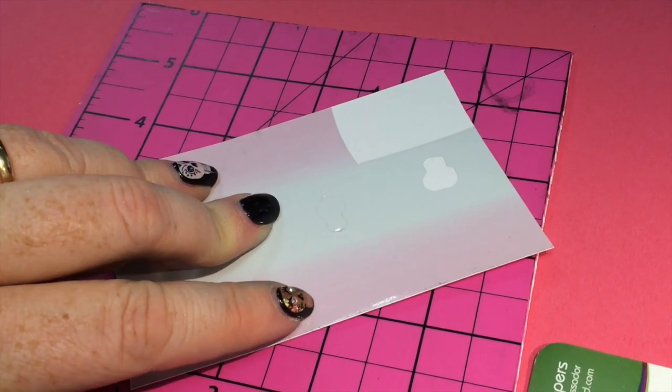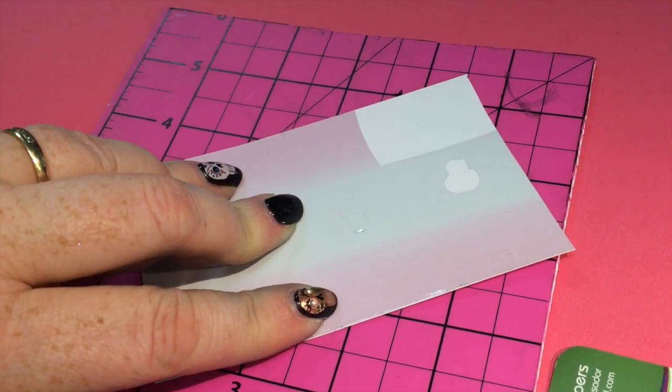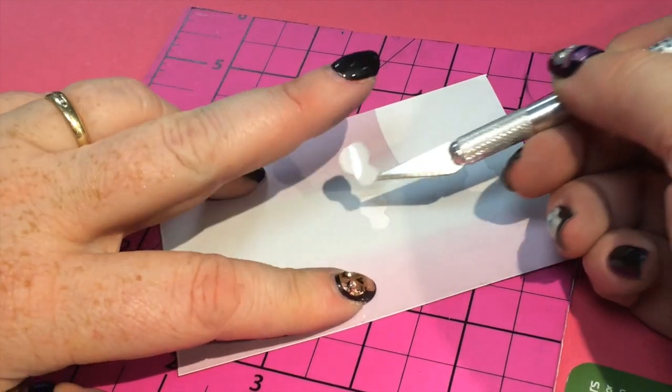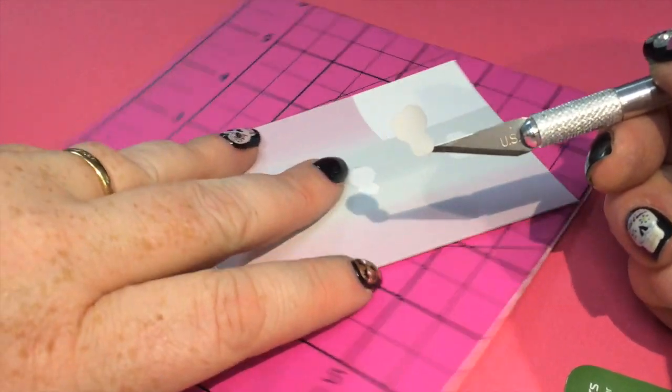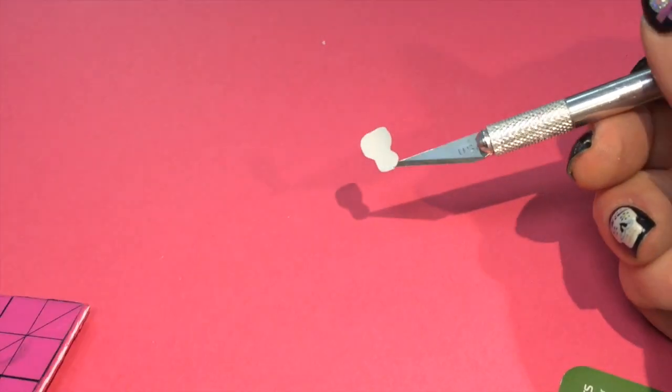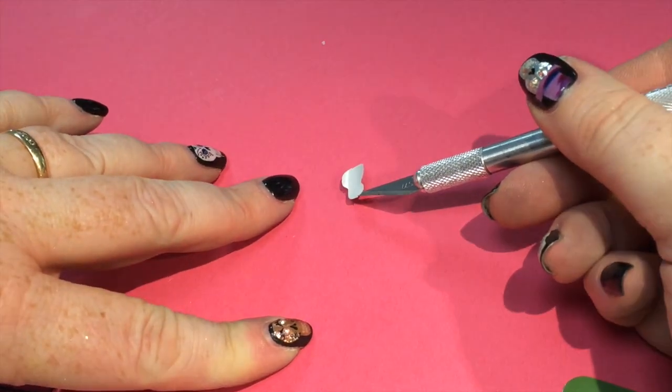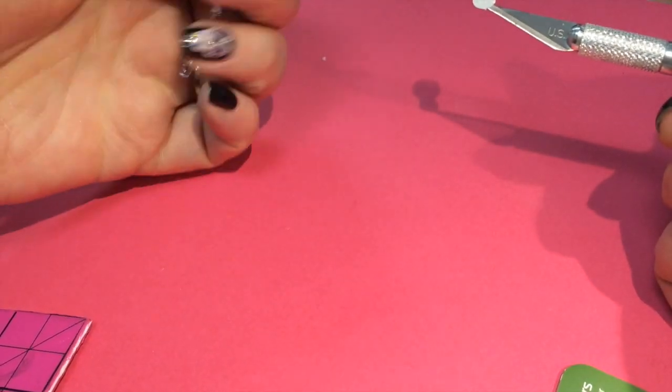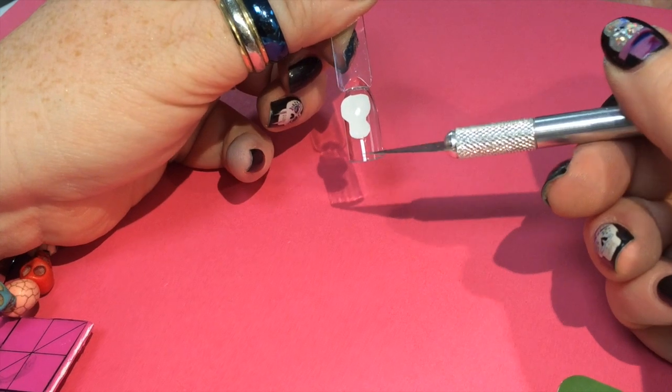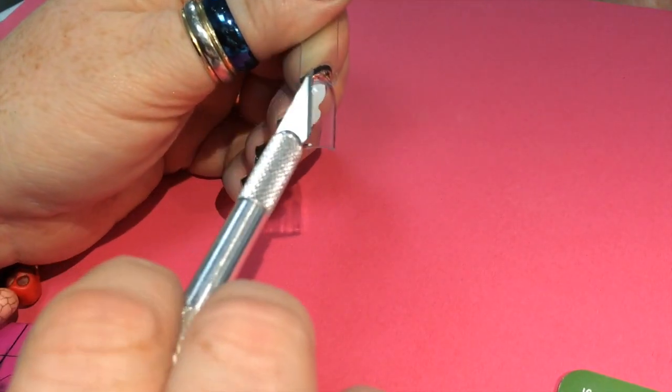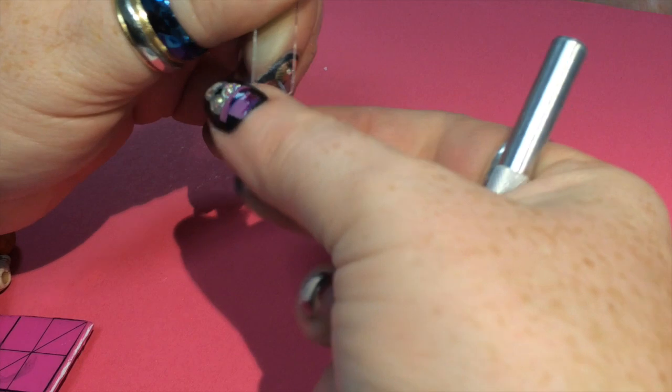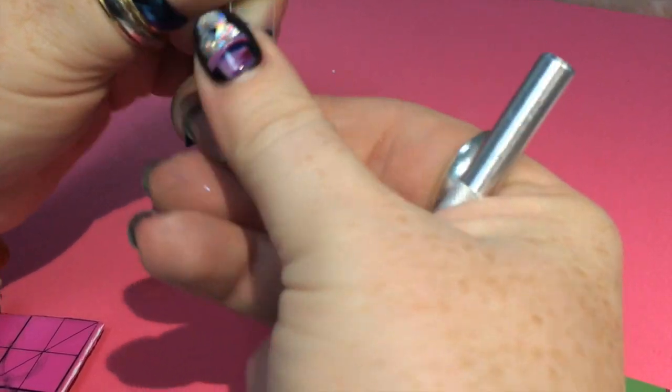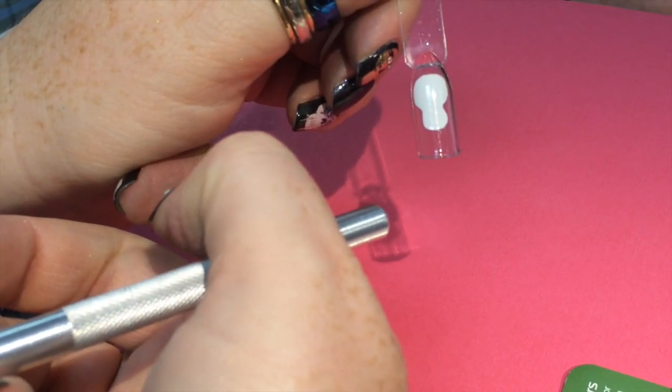I'm just going to pull that up using my straight blade. I would normally place this on something that I can remove it from so that I would be able to remove it after it was finished and apply to a nail. For this we're just going to slide it on a tip so that we can put it in and out of the lamp with the shellac details that we do.